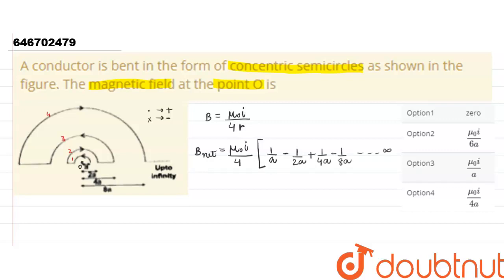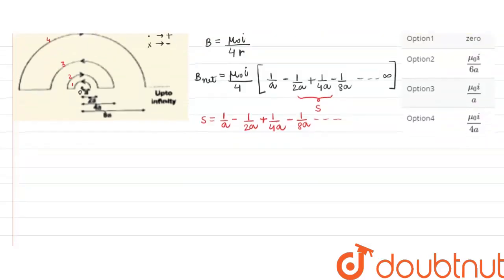To solve this whole equation, we have to solve this summation series. Let this equal S. So S = 1/a - 1/(2a) + 1/(4a) - 1/(8a) and so on.